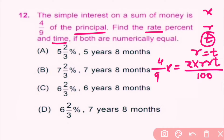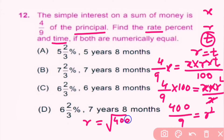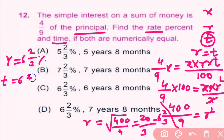Taking 100 to one side and x to the other side, 4/9 into 100 equals r squared (since r equals t). So r equals the square root of 400/9, which equals 20/3. Converting to mixed fraction: 6 and 2/3. So rate equals 6 and 2/3 percent and time equals 6 and 2/3 years, meaning 6 years and 8 months. So C is correct.